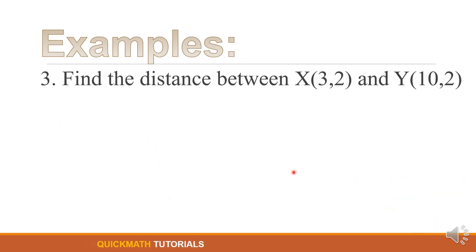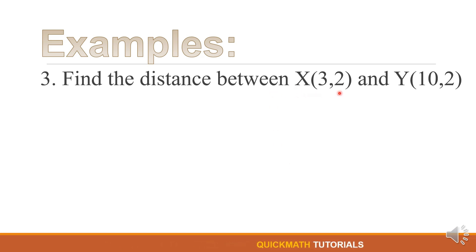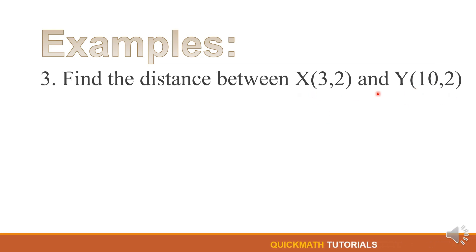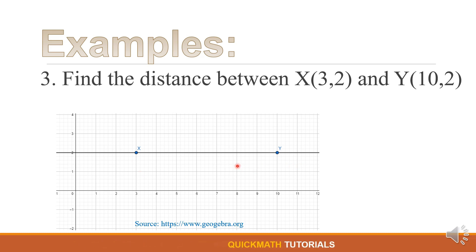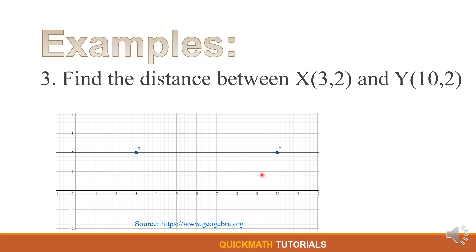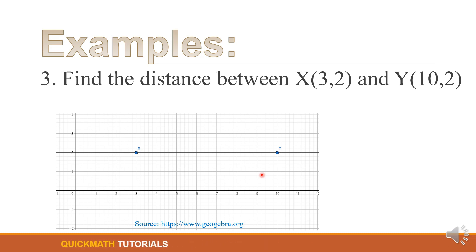For our third example, we will find the distance between point X, (3, 2), and point Y, (10, 2). If we will graph these two points, we have a horizontal line. If we have a horizontal line or vertical line, there is a quick solution to find the distance. For this example, since it is a horizontal line, here is a quick step.